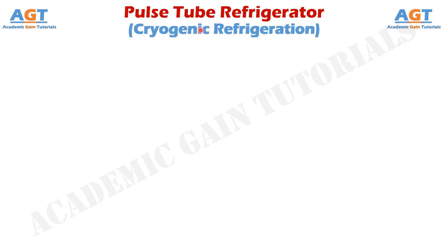The Pulse Tube Refrigerator is also called Cryogenic Refrigerator. The term 'cryo' is obtained from the Greek word cryo, which means to cool down something. Thus, it is also known as cryogenic refrigeration. Now let's discuss about it in detail.